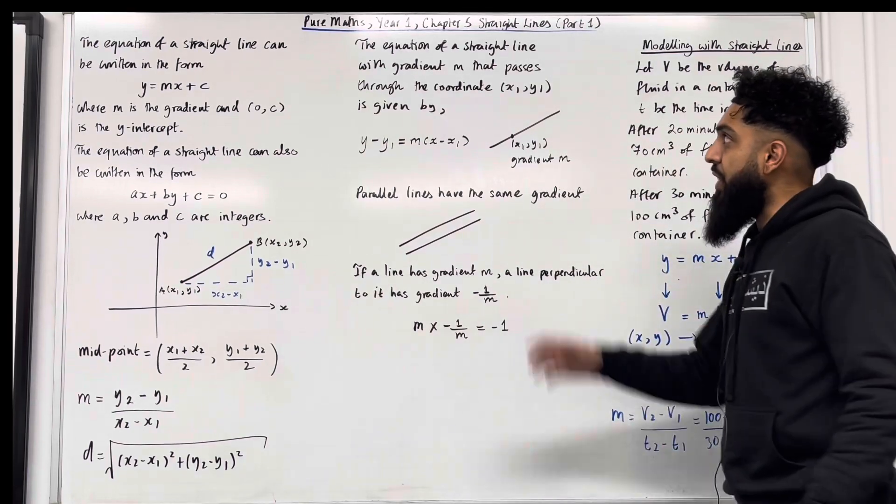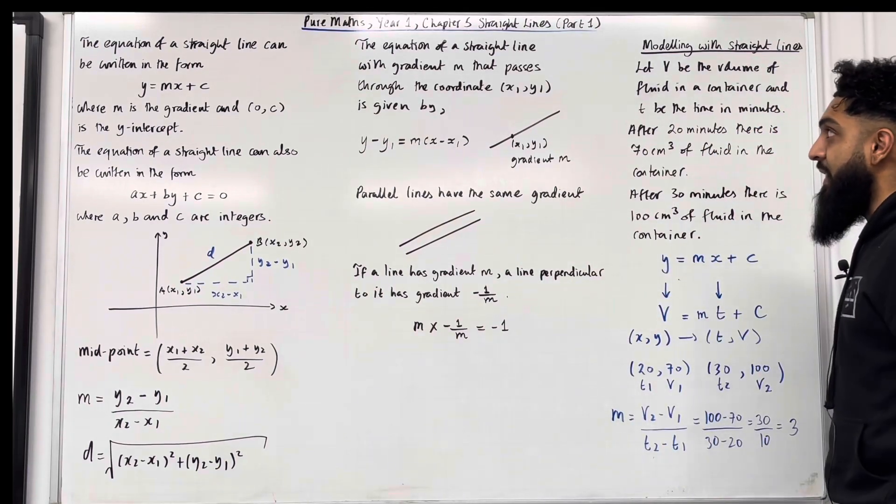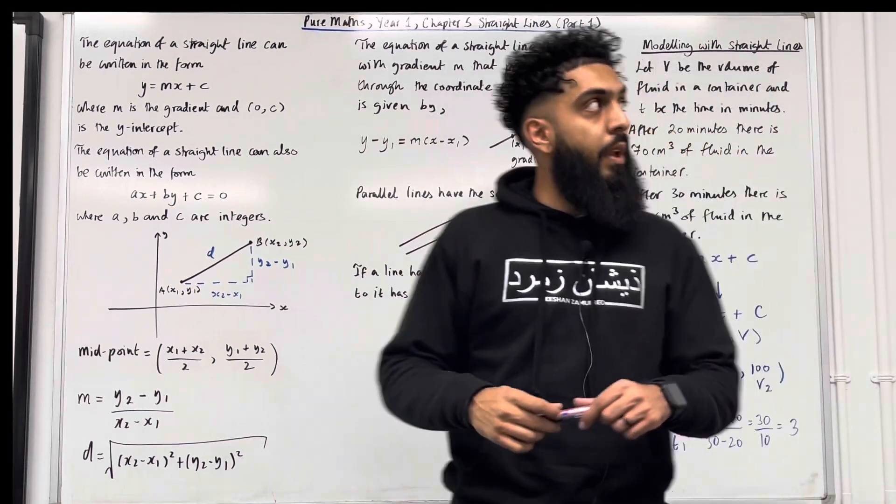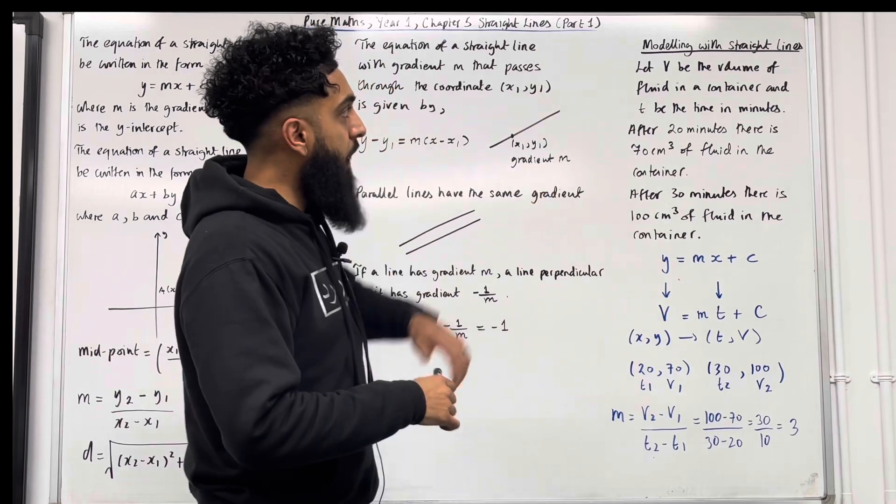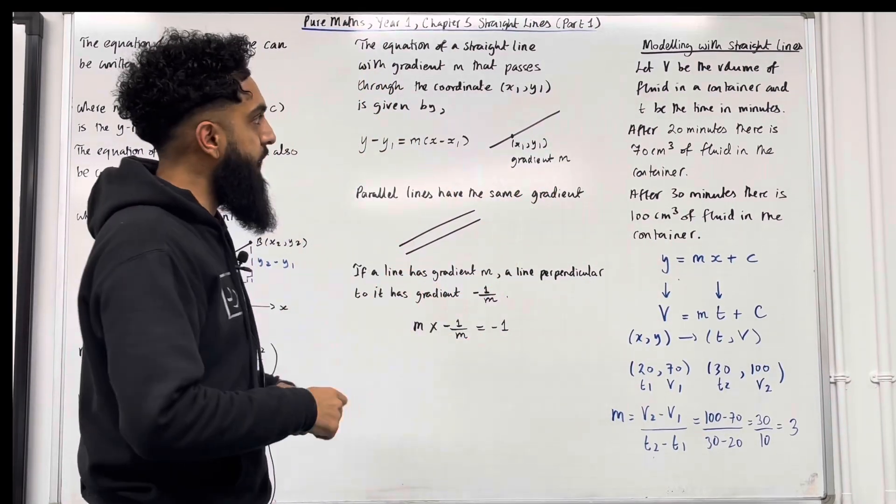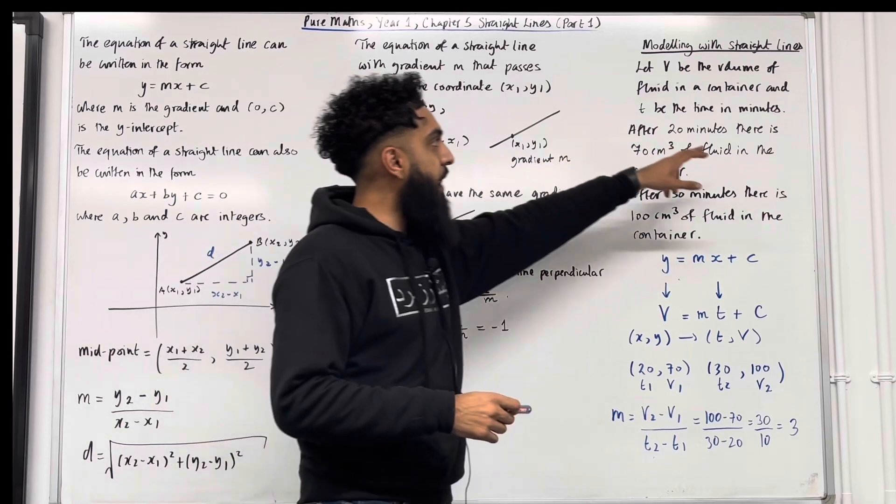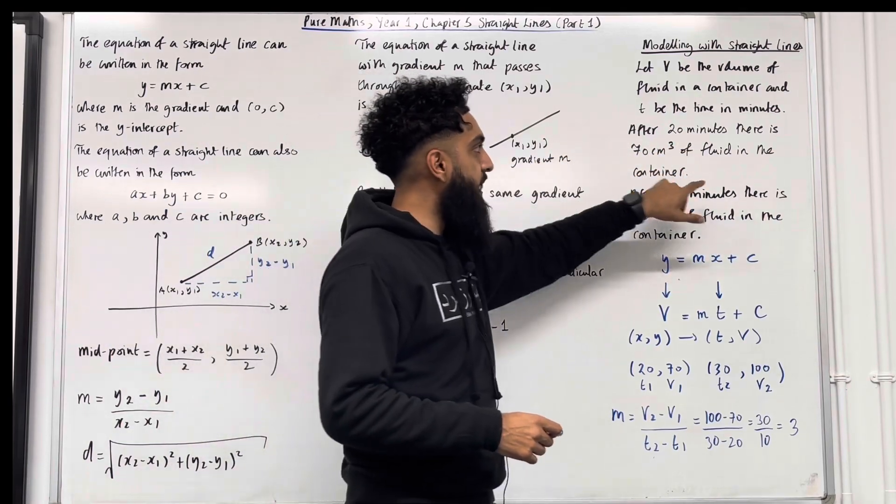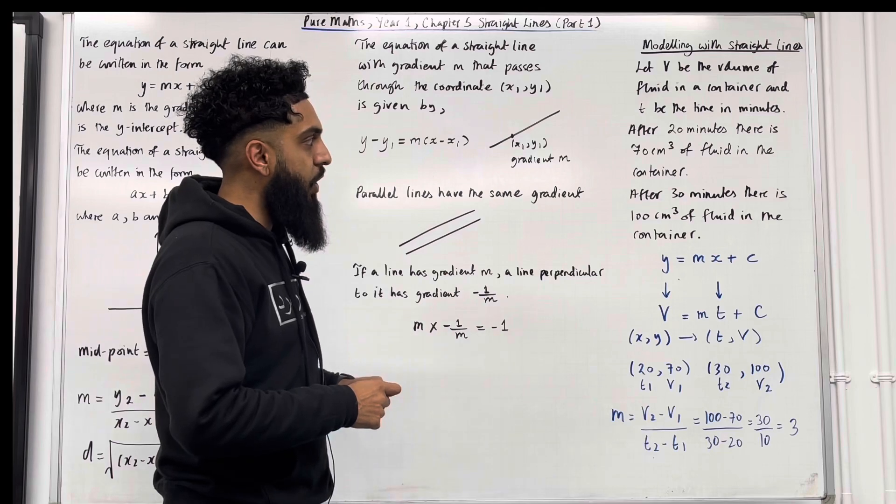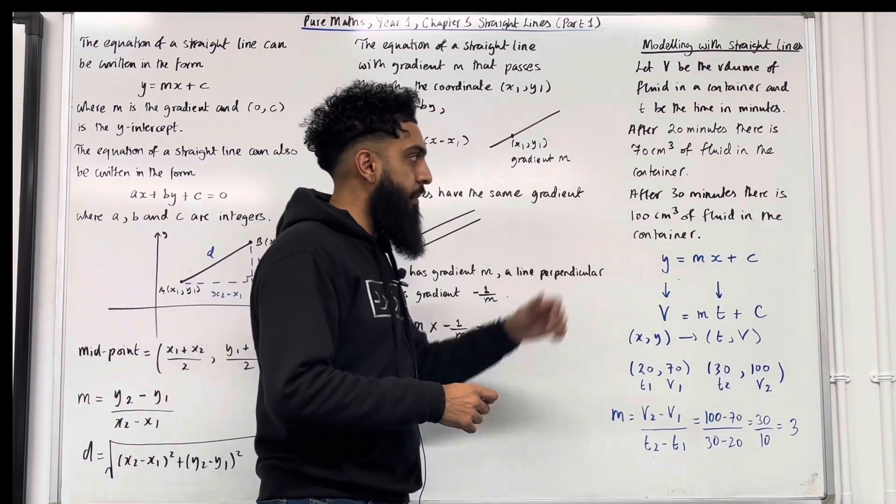The last section of chapter 5 straight lines in the Pearson A-level maths pure maths year 1 textbook is modelling with straight lines. Okay, let v be the volume of fluid in a container and t be the time in minutes. After 20 minutes, there is 70 centimetre cubed of fluid in the container. After 30 minutes, there is 100 centimetre cubed of fluid in the container.